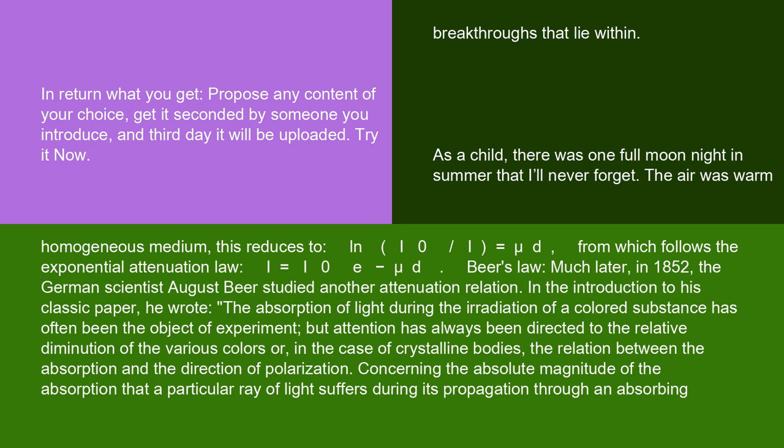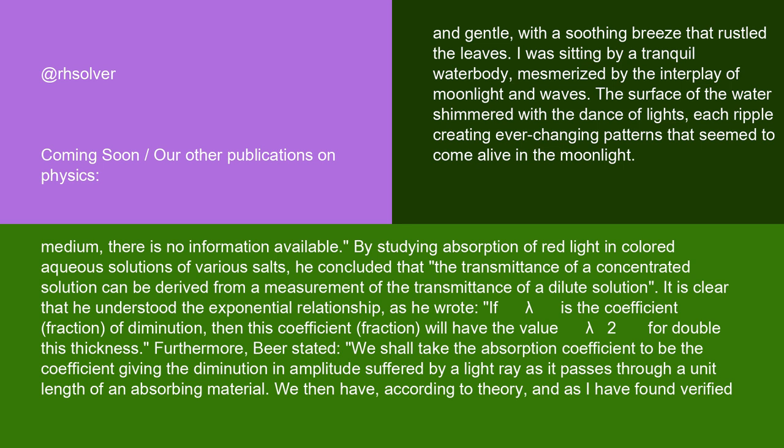Beer's Law. Much later, in 1852, the German scientist August Beer studied another attenuation relation. In the introduction to his classic paper, he wrote: the absorption of light during the irradiation of a colored substance has often been the object of experiment, but attention has always been directed to the relative diminution of the various colors, or in the case of crystalline bodies, the relation between the absorption and the direction of polarization. Concerning the absolute magnitude of the absorption that a particular ray of light suffers during its propagation through an absorbing medium, there is no information available.